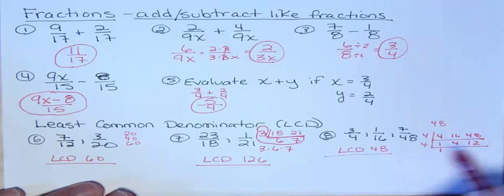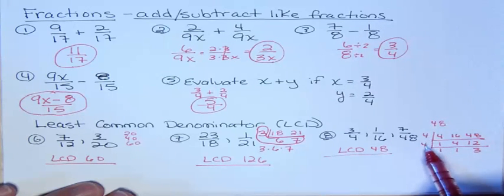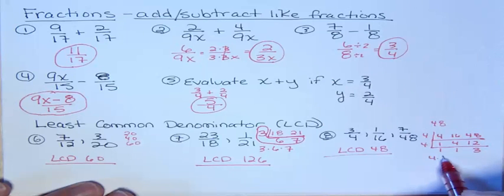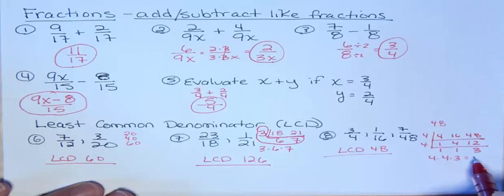Well, 4. 4 goes into 4 once. 4 goes into 12 three times. And then I would multiply 4 times 4 times 3. I could times 1 times 1, but that's not going to change anything. 4 times 4 times 3 is 48. So I could have gotten that answer the other way, too.